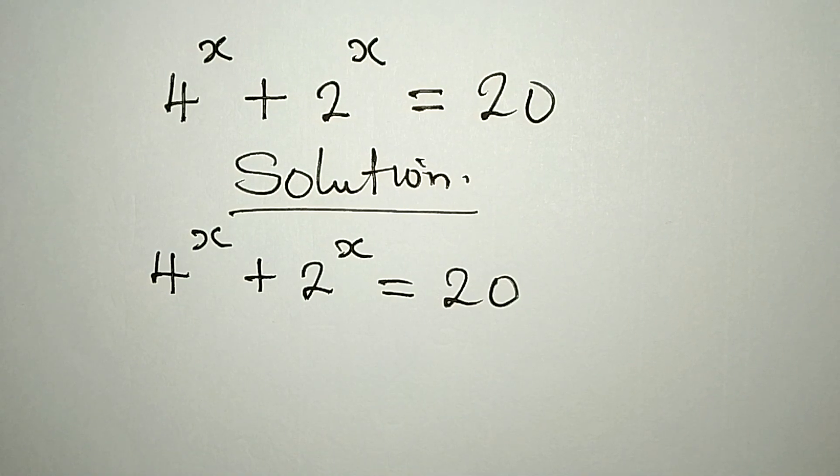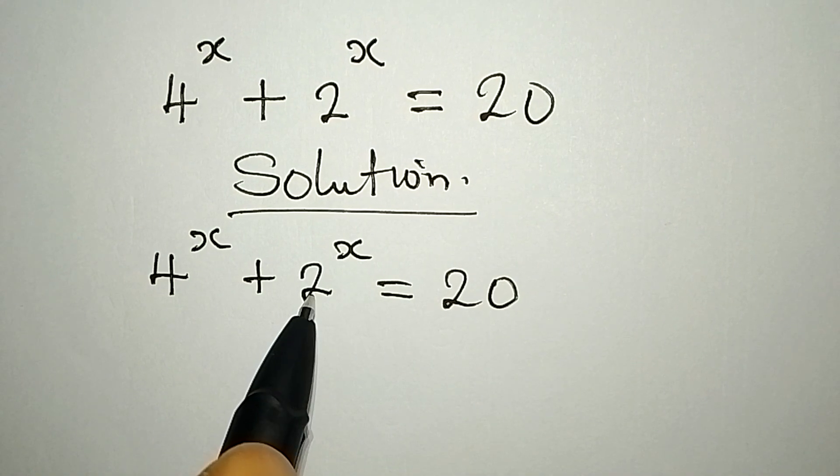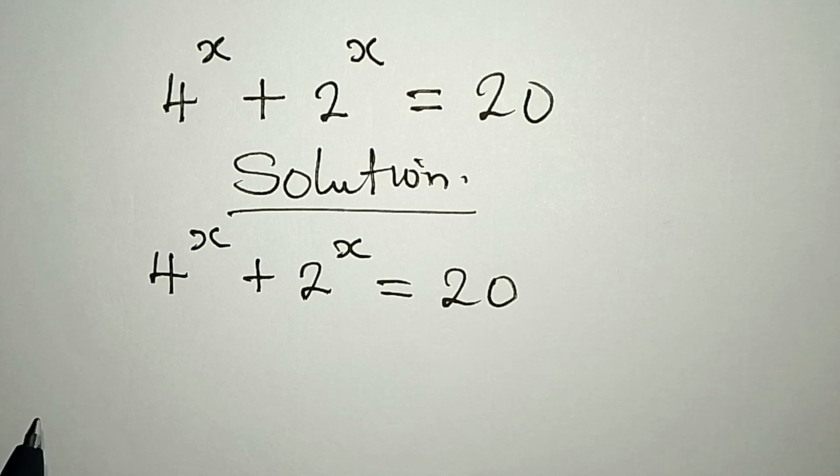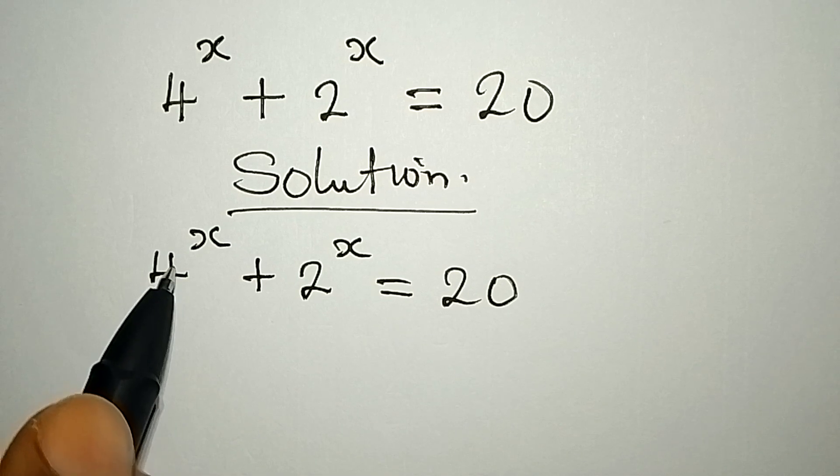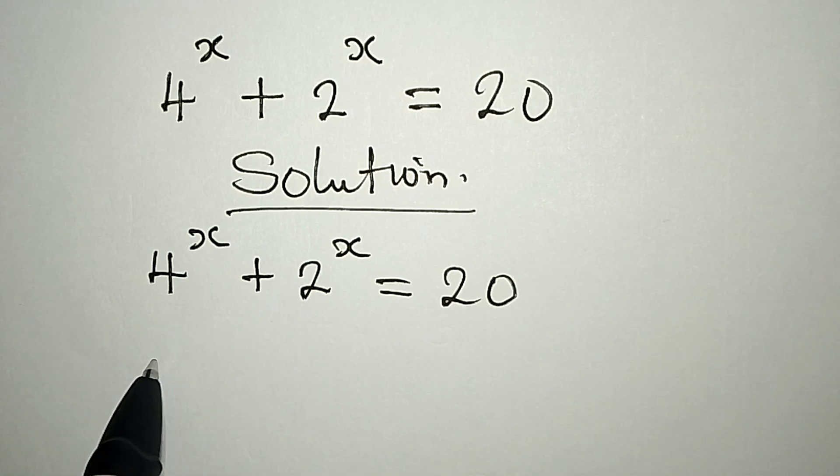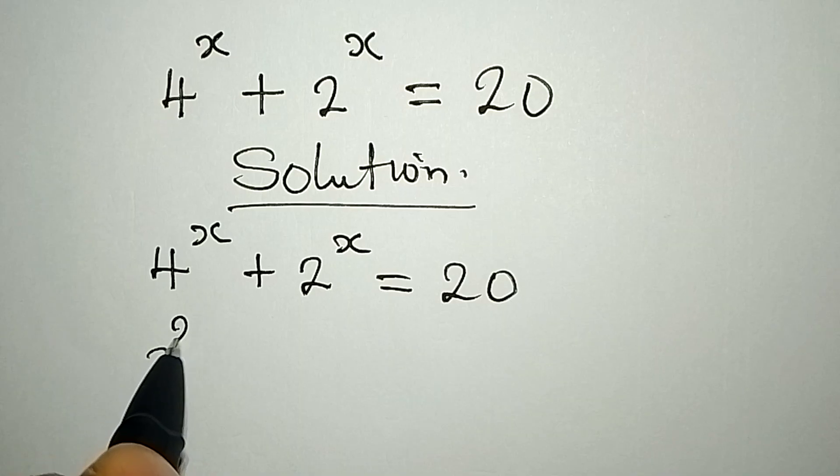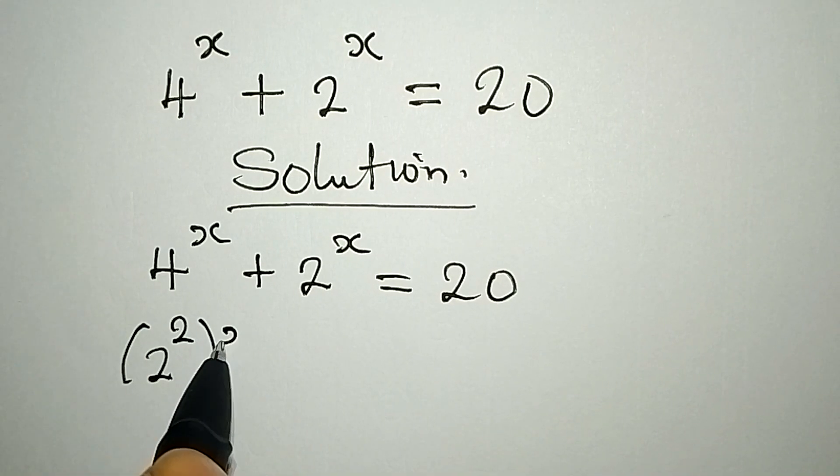That would be wrong because we cannot add this and this together. But I can express this to have 2 as the base, so we'll have 2 to the power of 2, then to the power of x.